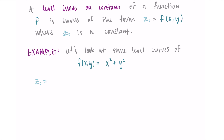To do some level curves I've picked specific z values that work nicely: z-naught equals 1, z-naught equals 4, and z-naught equals 9. Just a note — if you were doing this on your own you could pick whatever constant you wanted for z sub zero. I'm choosing these since I know they give the results I want to illustrate.